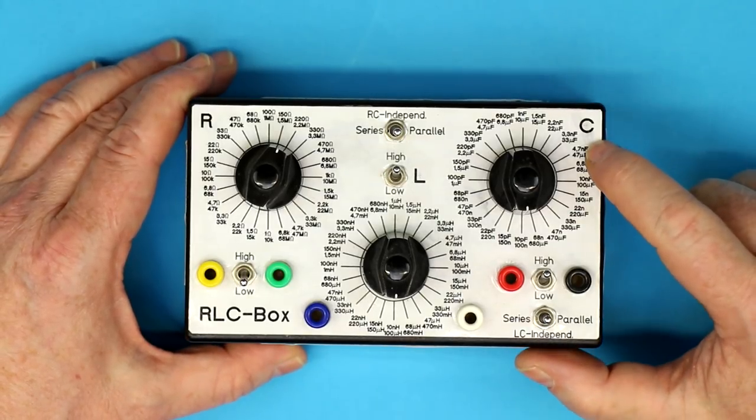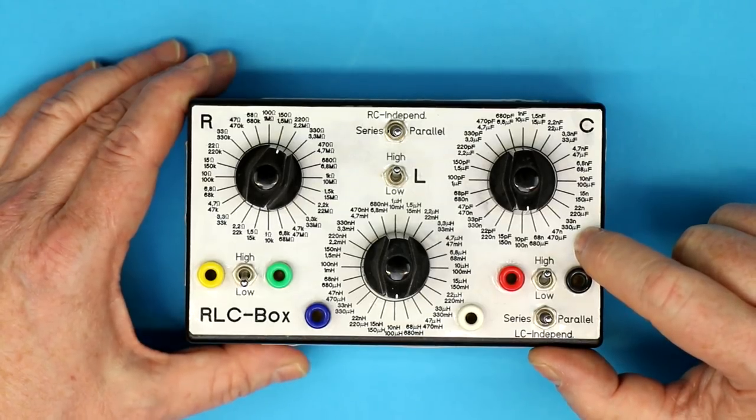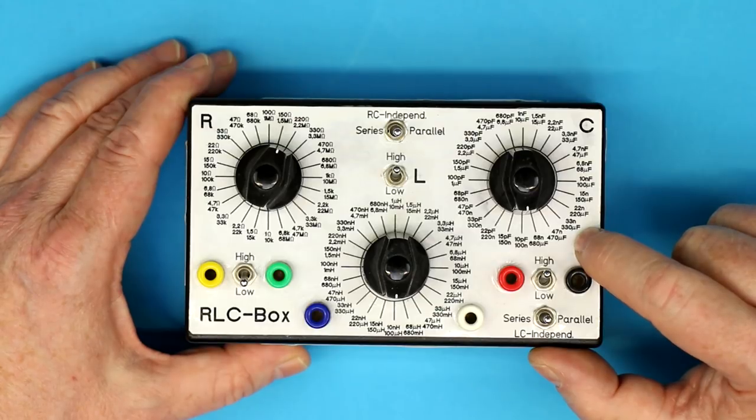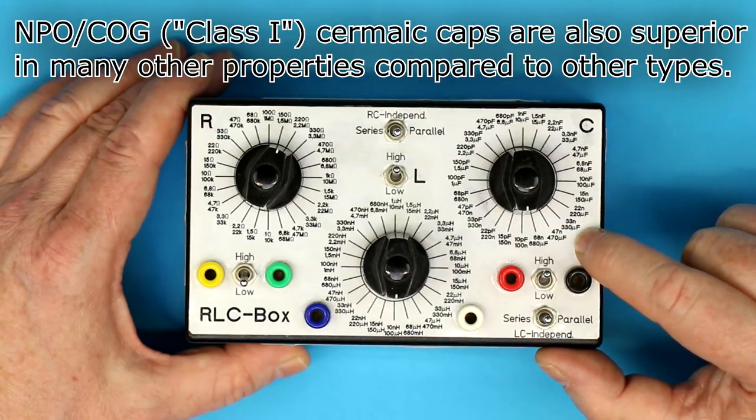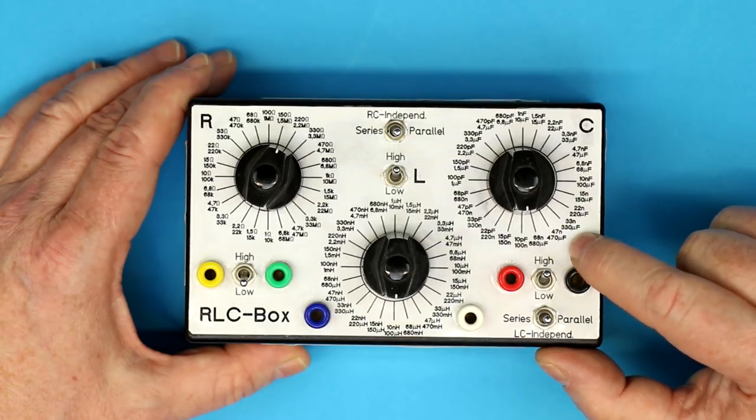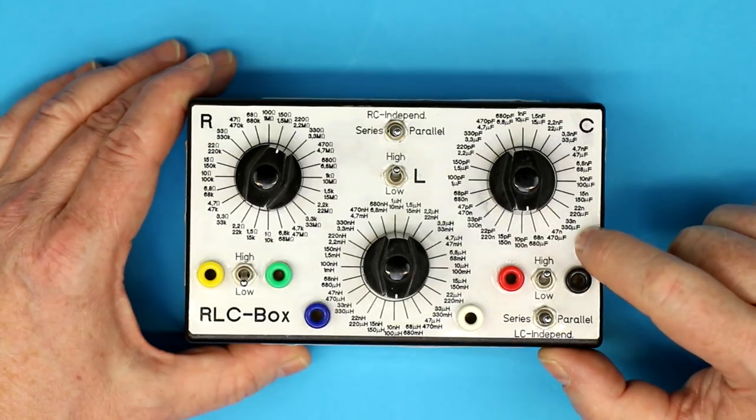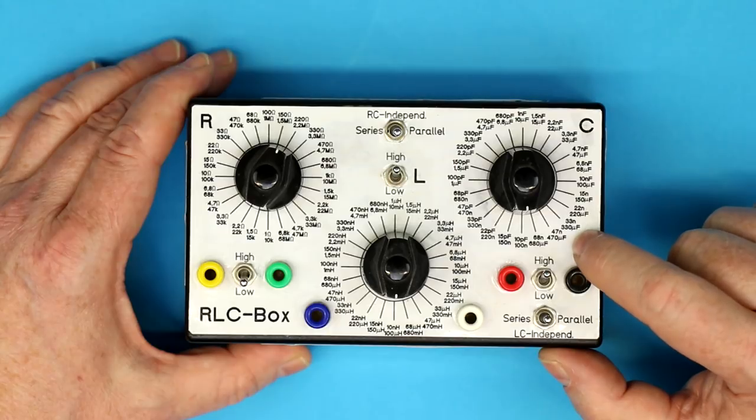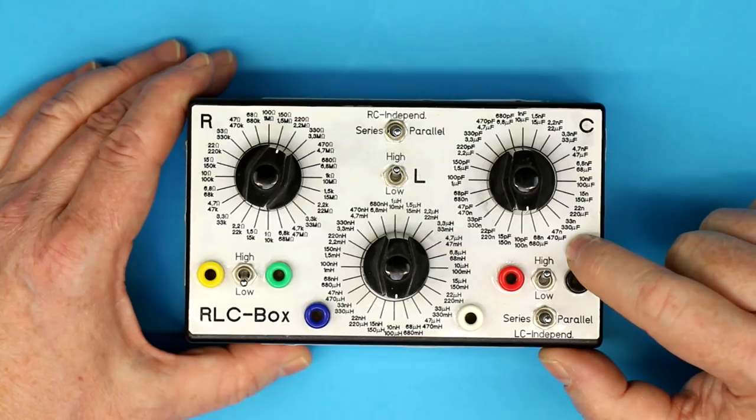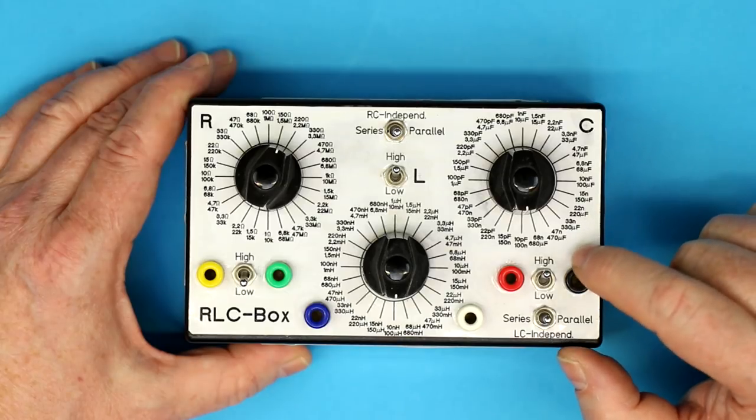For the capacitors up to 68 nanofarads we chose five percent ceramic COG or NPO capacitors because they have the best radio frequency properties. Above that, the next decade from 100 nanofarads to one microfarad will be high quality WIMA, a German capacitor company. It will be high quality polypropylene film capacitors and from one microfarad to 10 microfarads it will be also high quality mylar film capacitors. From then on film capacitors simply would become too large and nearly unavailable.